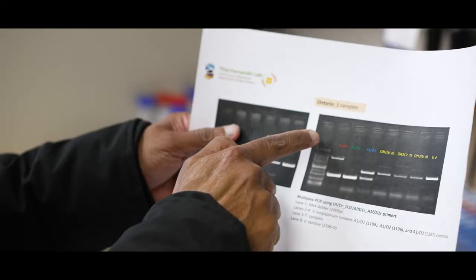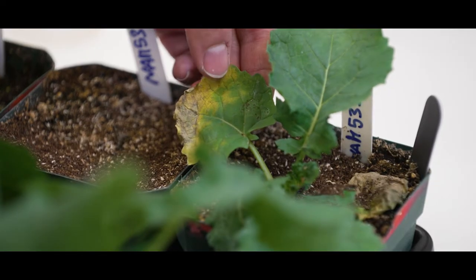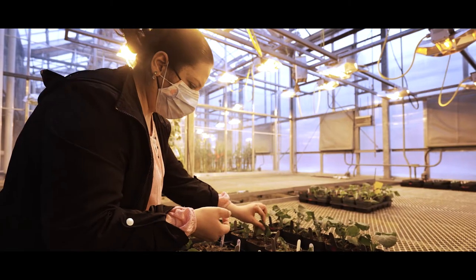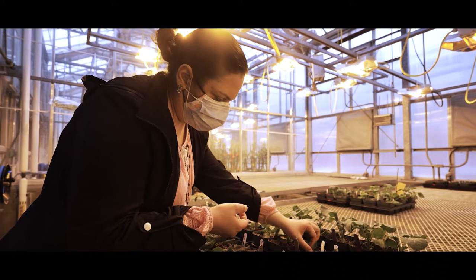Verticillium stripe was first discovered in Manitoba in 2014. Since then, we've found it all across Canada. We do experience yield loss and crop damage, which impacts a producer's bottom line. There are a few key diagnostic features that growers and agronomists should be looking for when scouting their canola fields.